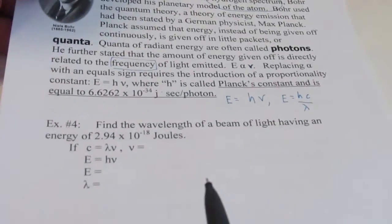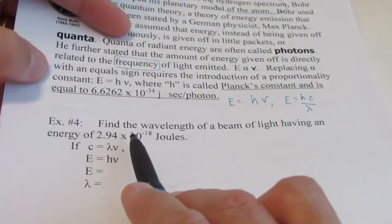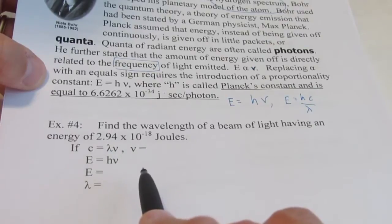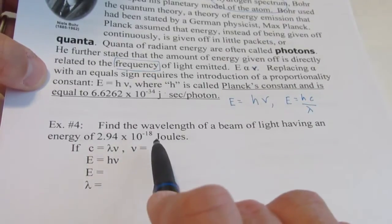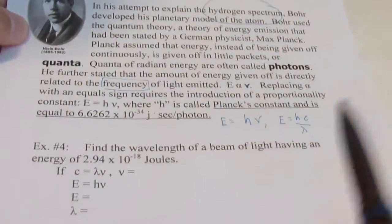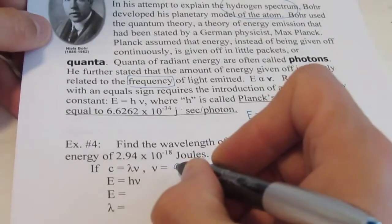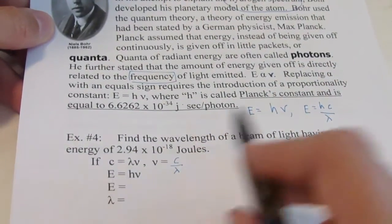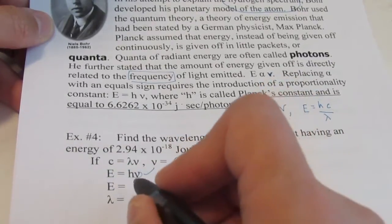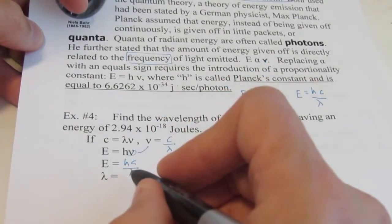So let's take a look at example four. In the previous video, we did a problem similar to this. This time, we want to find the wavelength of a beam of light having an energy of 2.94 times 10 to the negative 18th joules per photon. Remember, C equals lambda nu, so nu is the same as C over lambda. And if we use this equation, E equals H times nu, we could also replace nu for C over lambda, and rewrite that as HC over lambda. And using our algebra skills, we can solve this equation for lambda.